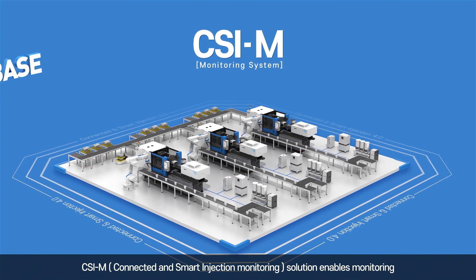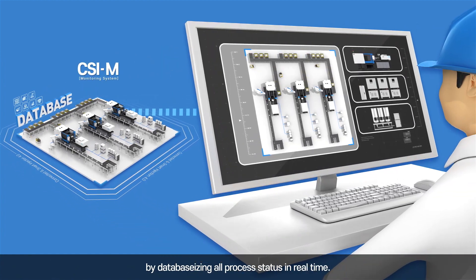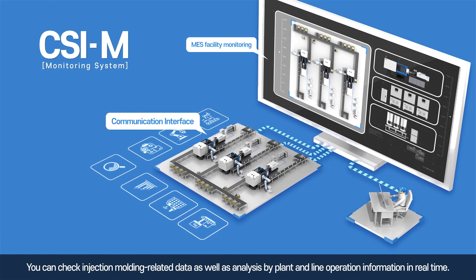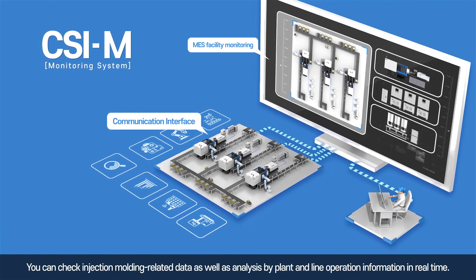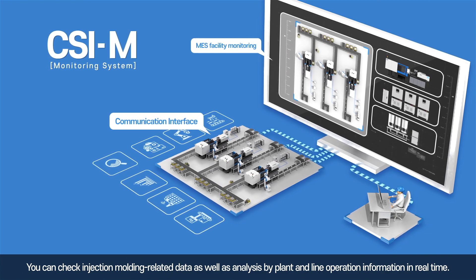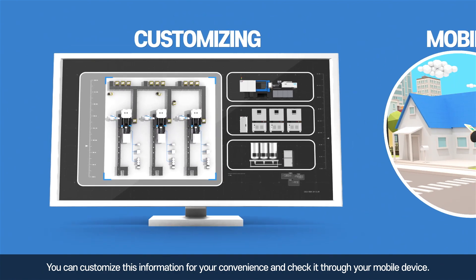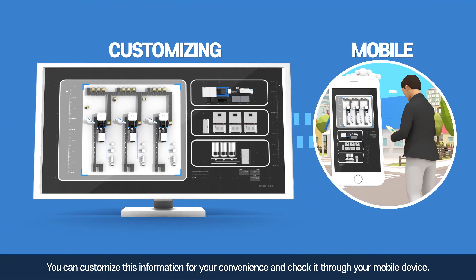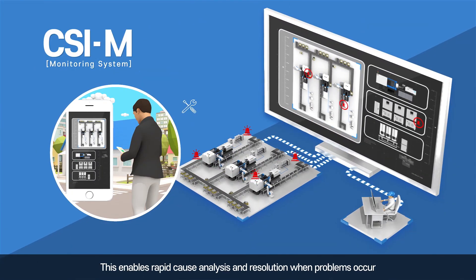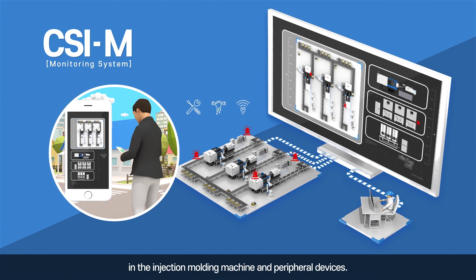The CSI M solution enables monitoring by database-sizing all process status in real time. You can check injection molding related data as well as analysis by plant and line operation information in real time. You can customize this information for your convenience and check it through your mobile device. This enables rapid cause analysis and resolution when problems occur in the injection molding machine and peripheral devices.